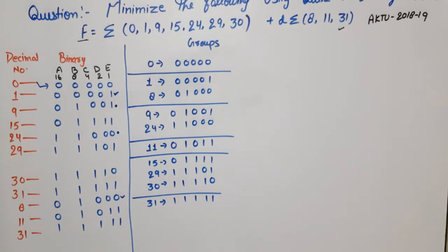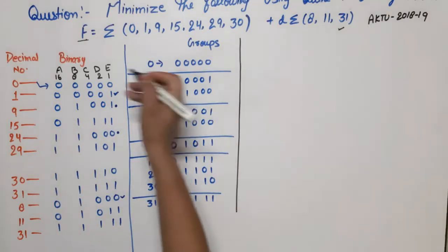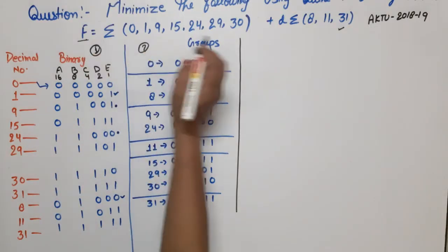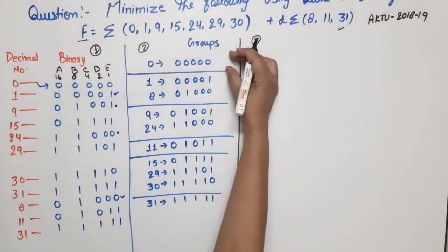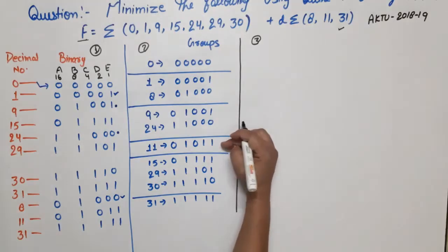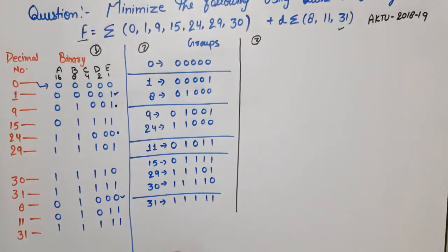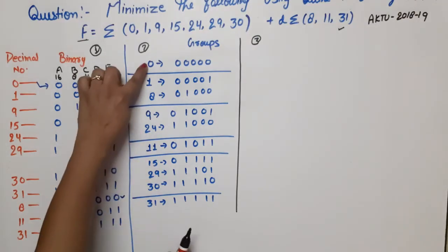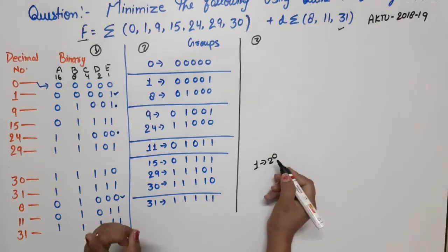Now what will we do in the next step? We will combine and compare them. This is step 1 grouping, and step 2 is the first reduction. Remember: compare only previous group with the next adjacent group. The easiest way is — if you subtract the two minterms and the difference can be written as 2 raised to some power, then pairing is possible.